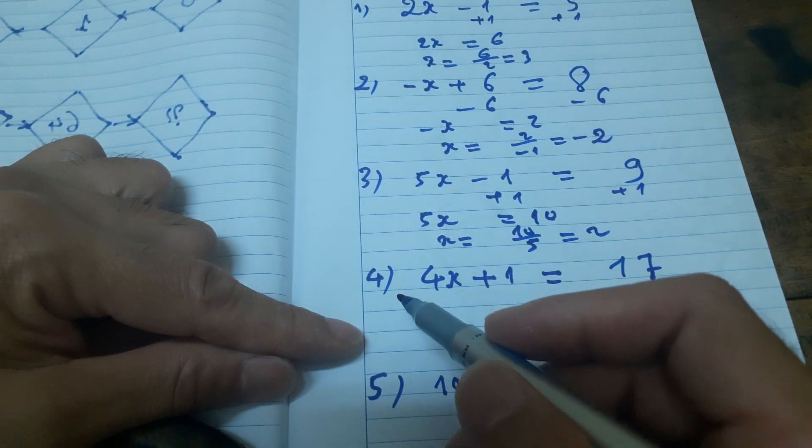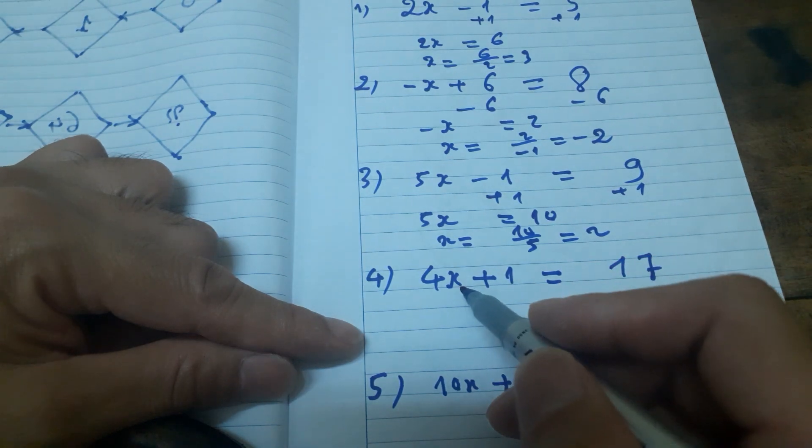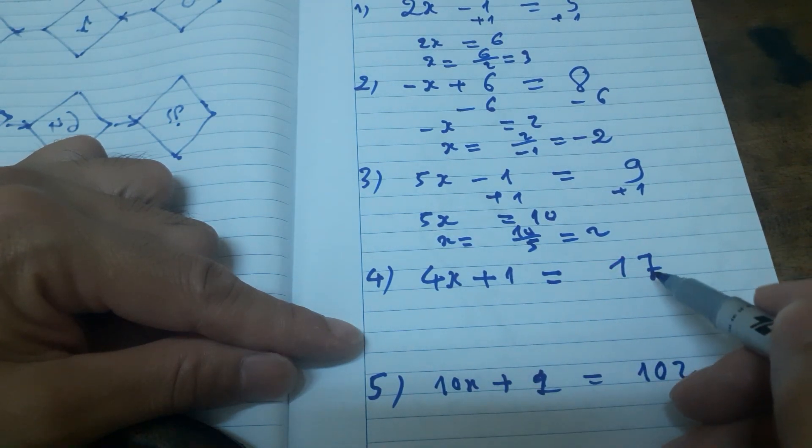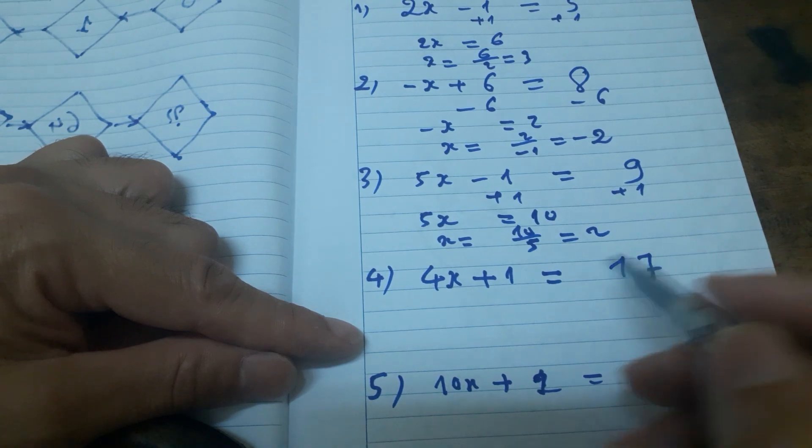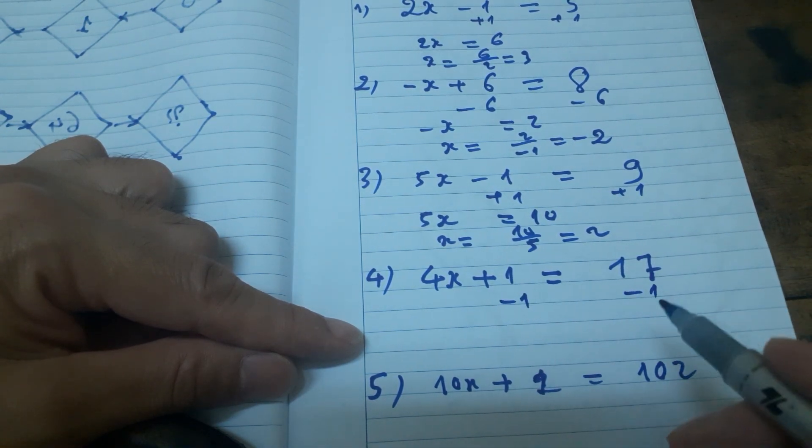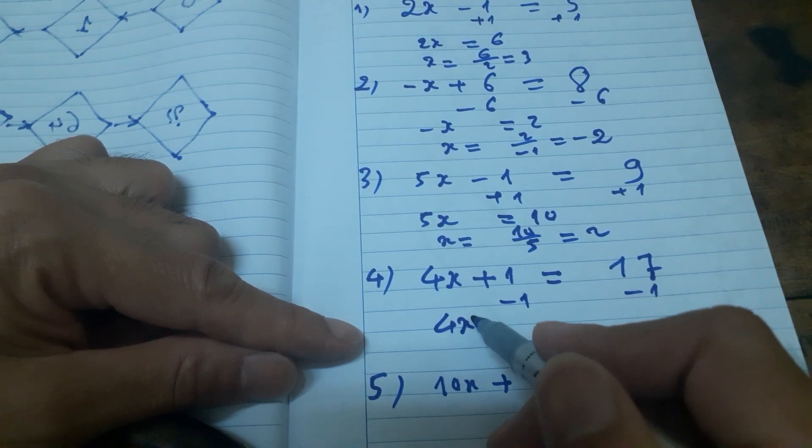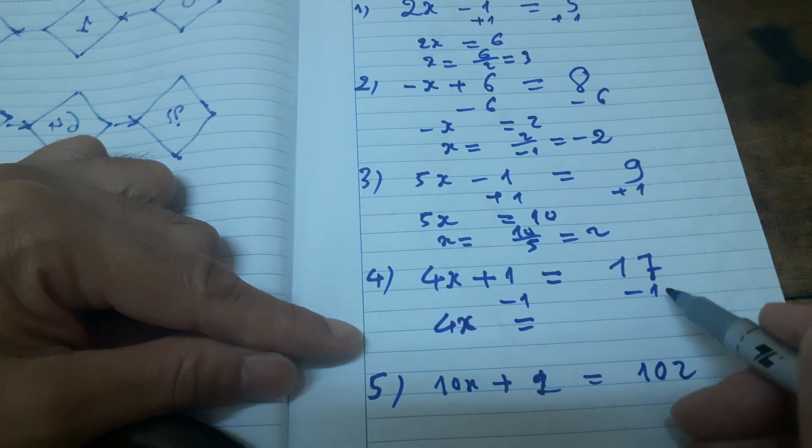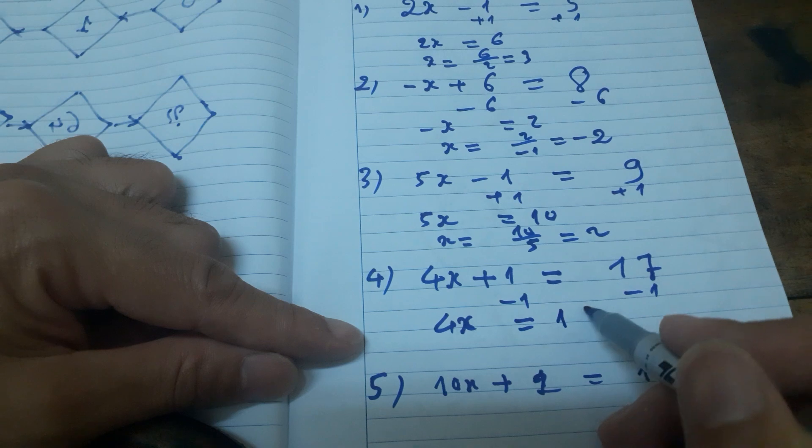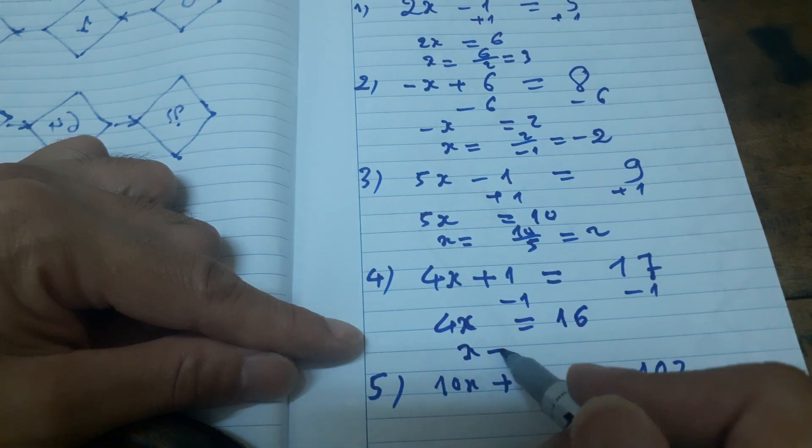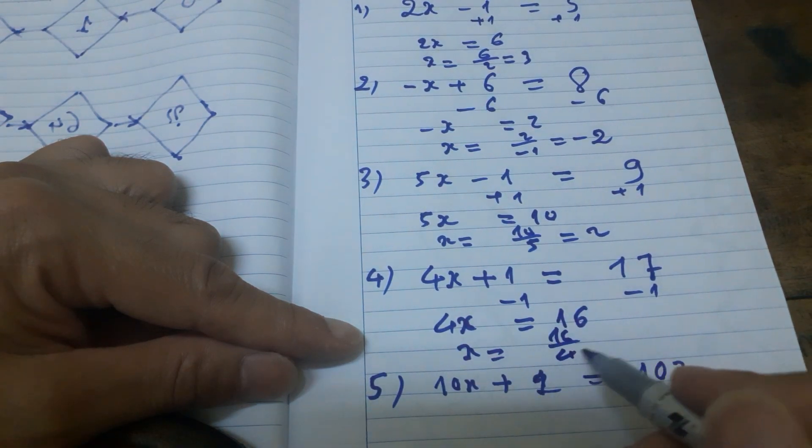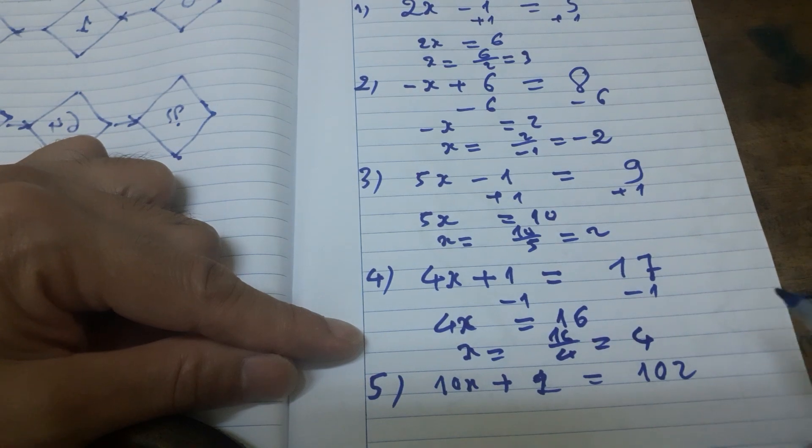Example 4: 4x + 1 = 17. Subtract 1 from both sides. Minus 1, minus 1. 4x plus 1 minus 1 equals 0, equals 7. Wait, 17 minus 1 equals 16. 4x equals 16. x equals 16 divided by 4, equals 4. Okay.